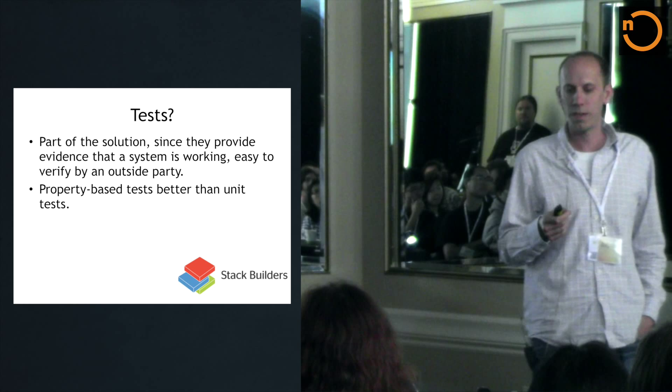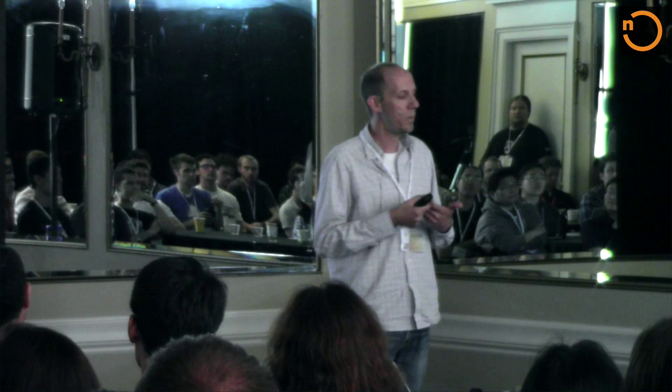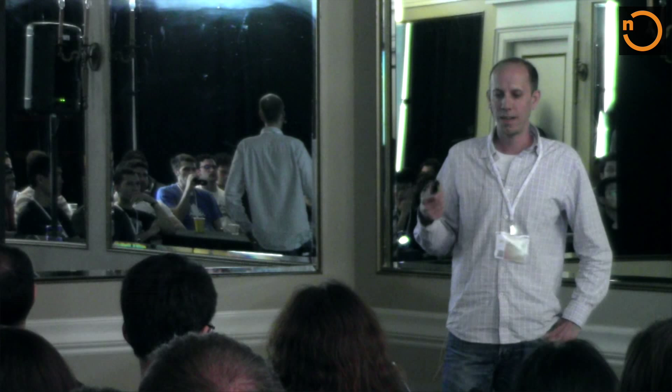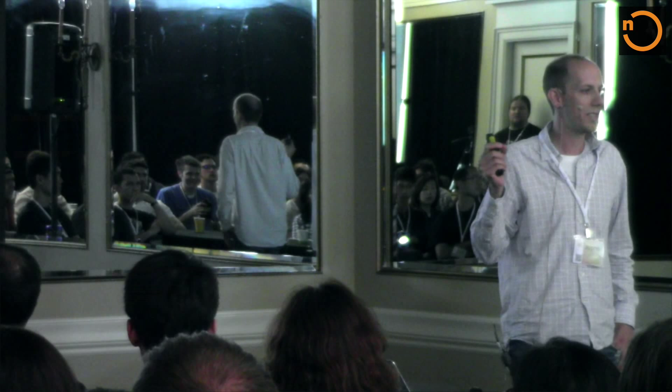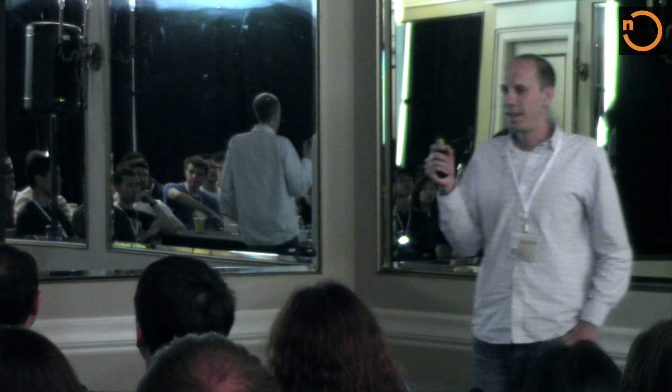One way you can gain assurance that a system is working is through tests. Tests are a form of dynamic analysis — you have to run the program in order to get the feedback. You're writing a test, that's the input to the program, and you get a specific output. But I think we want to go further than this. What we actually want is static analysis — something even more interesting where we can get information about whether the program's behavior will be correct before we even run it, at compile time. This is where types come into the picture.